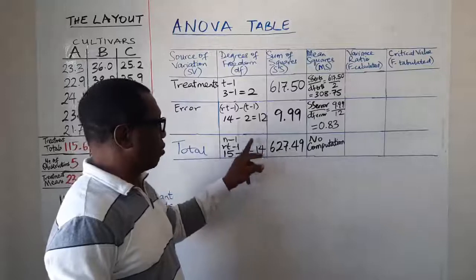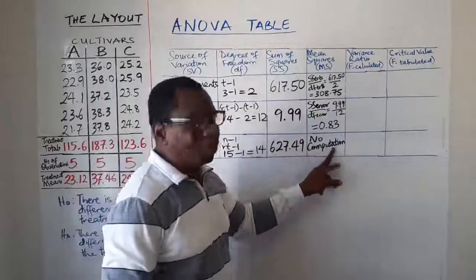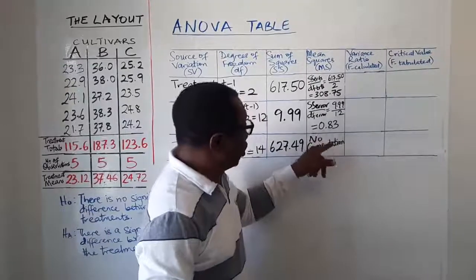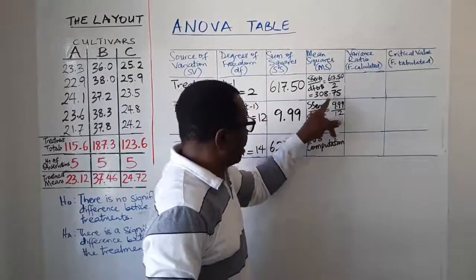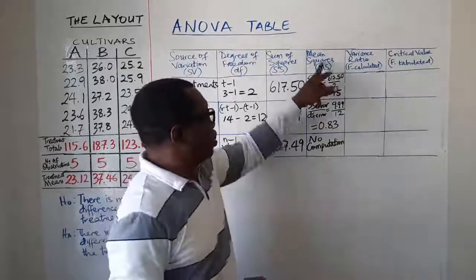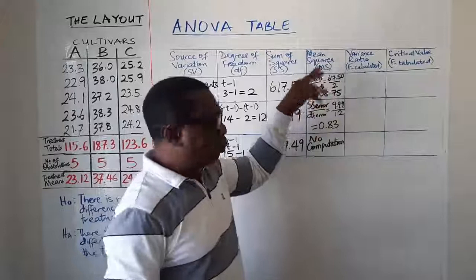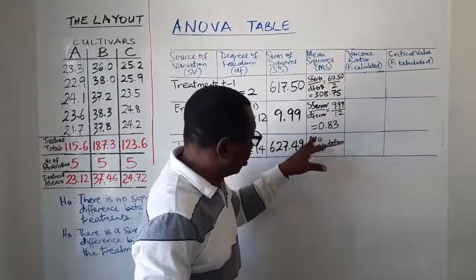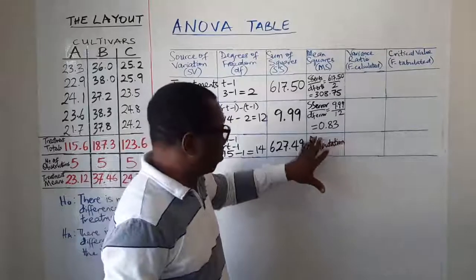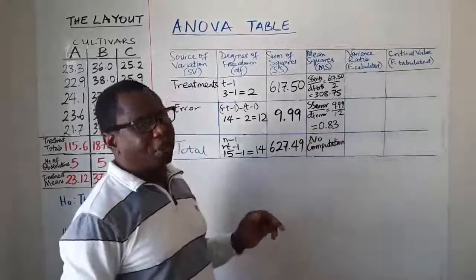And you put the value here. You will realize that the value you will put here will not be the addition of this and this. So we say mean squares are not additive. So because of that you don't compute MS for total at all. You leave that place blank. No computation there.